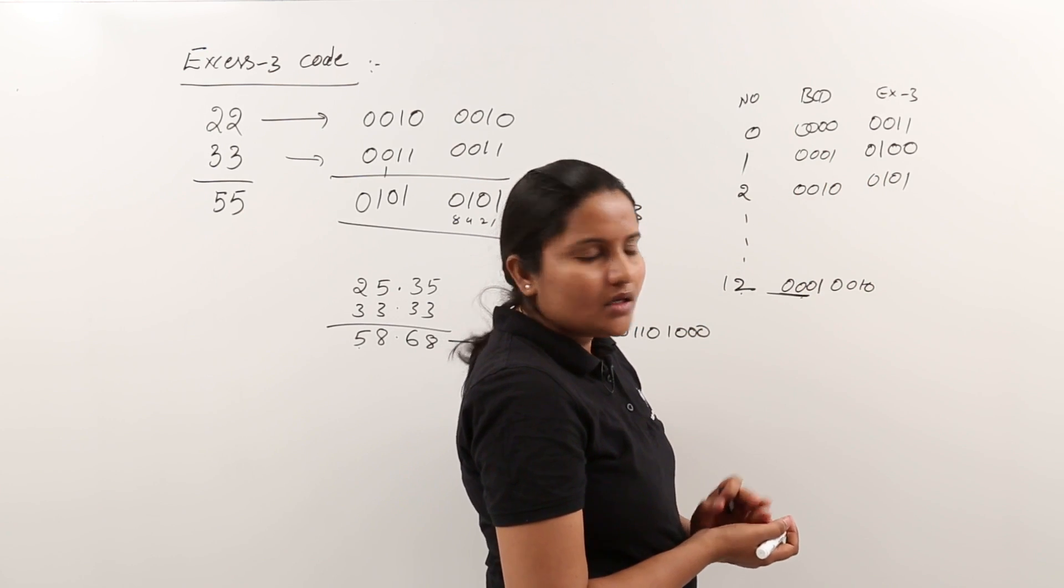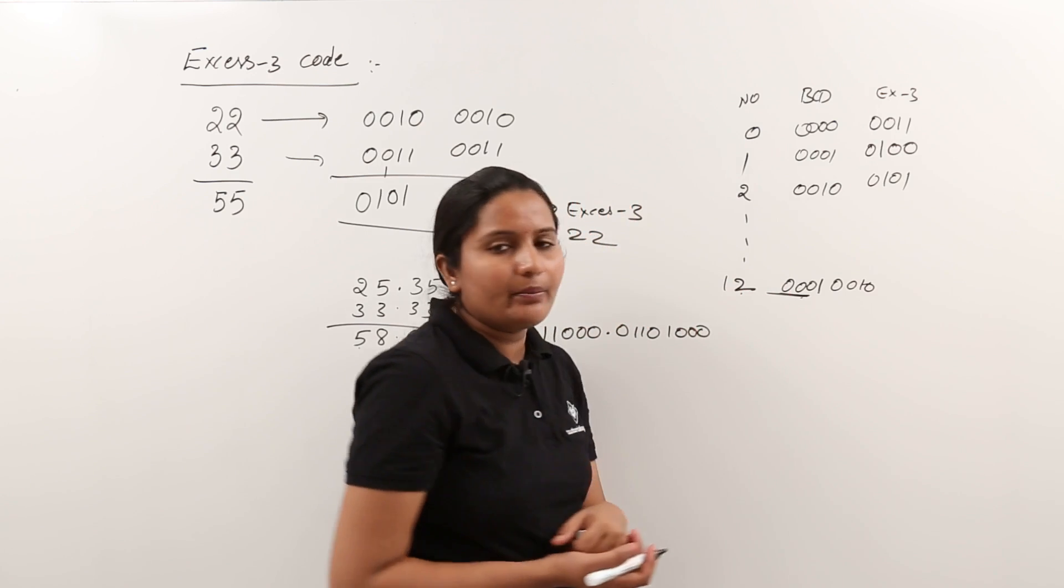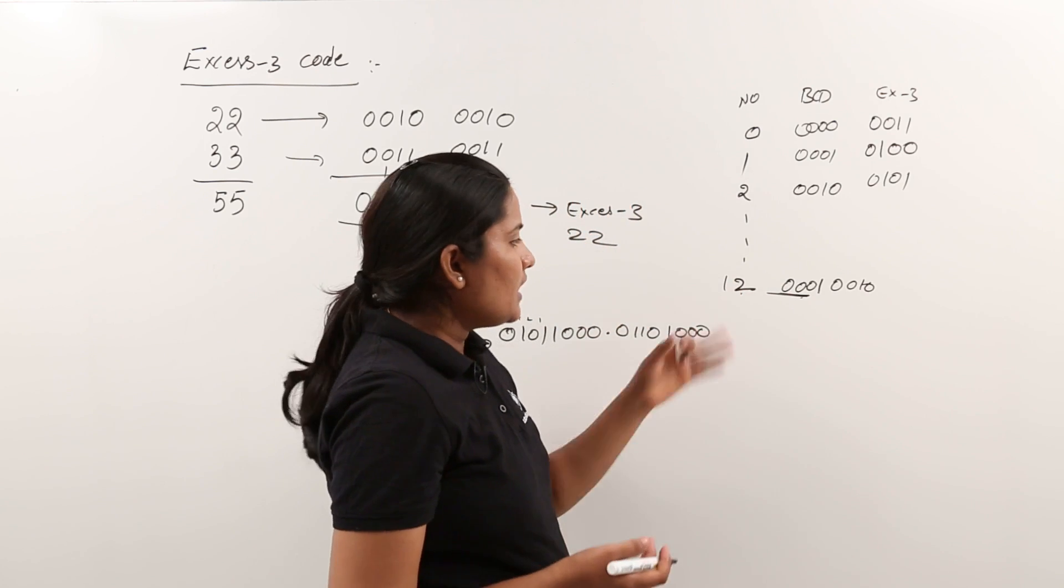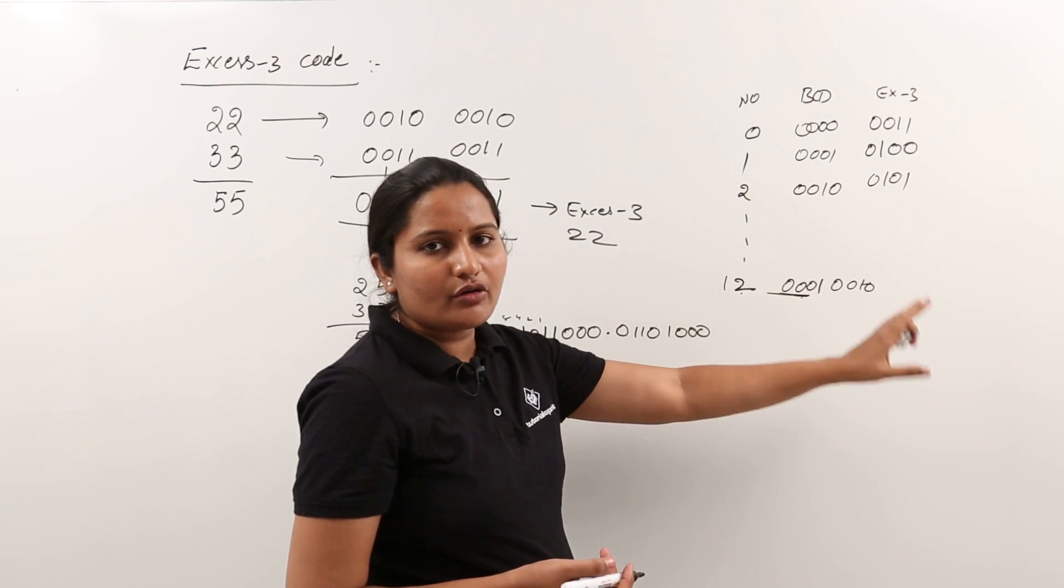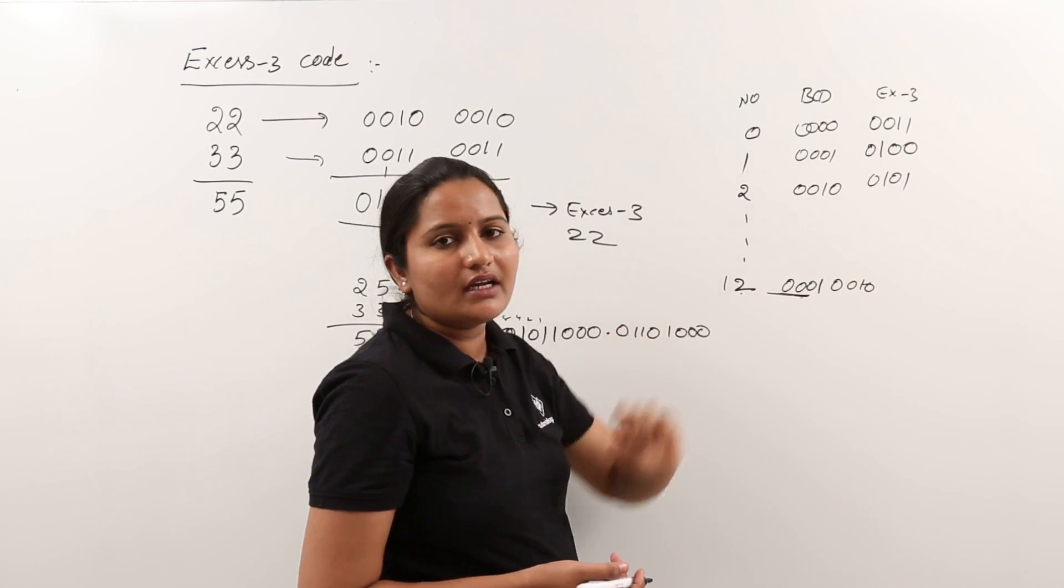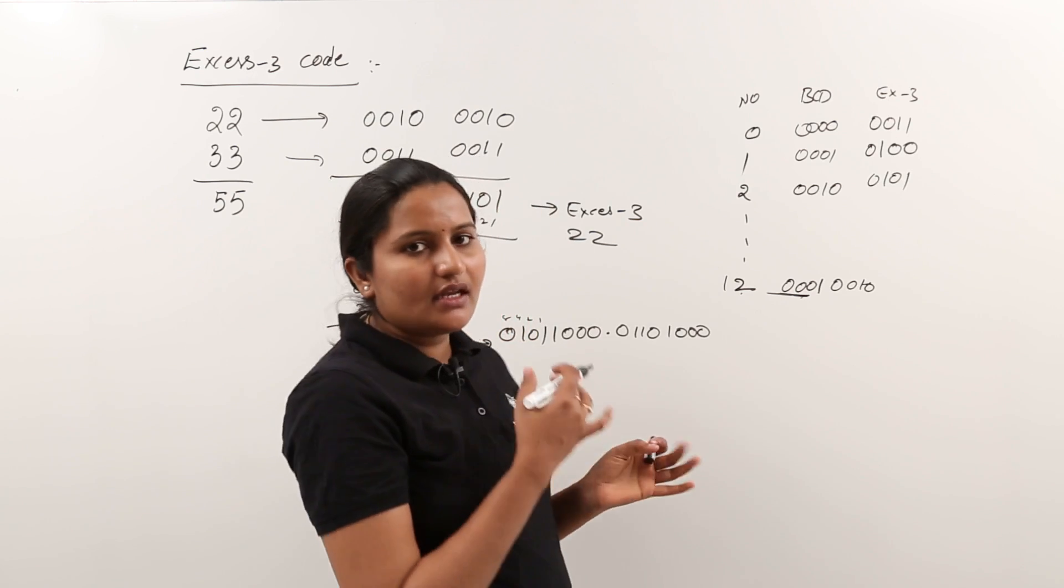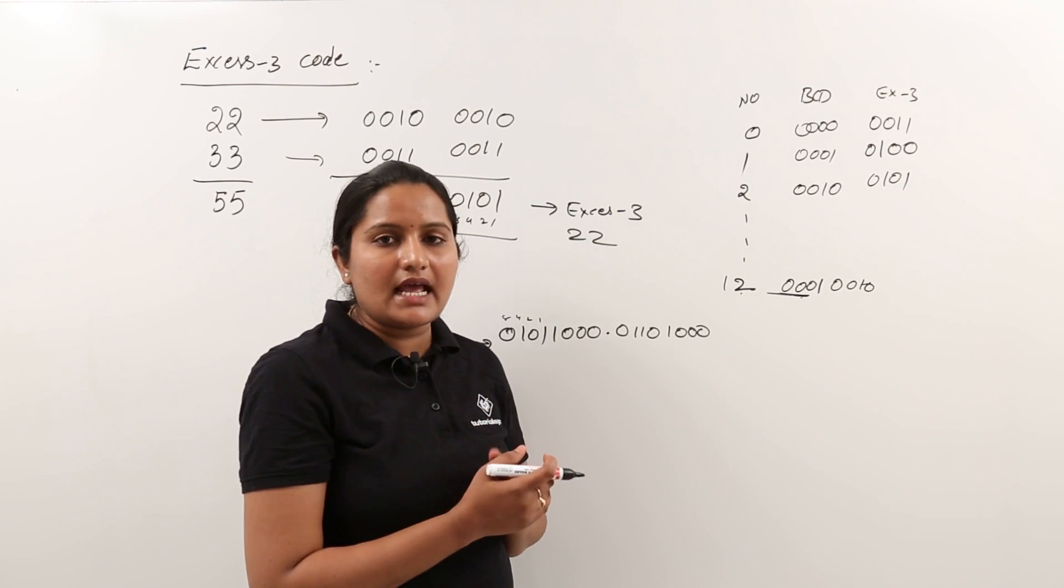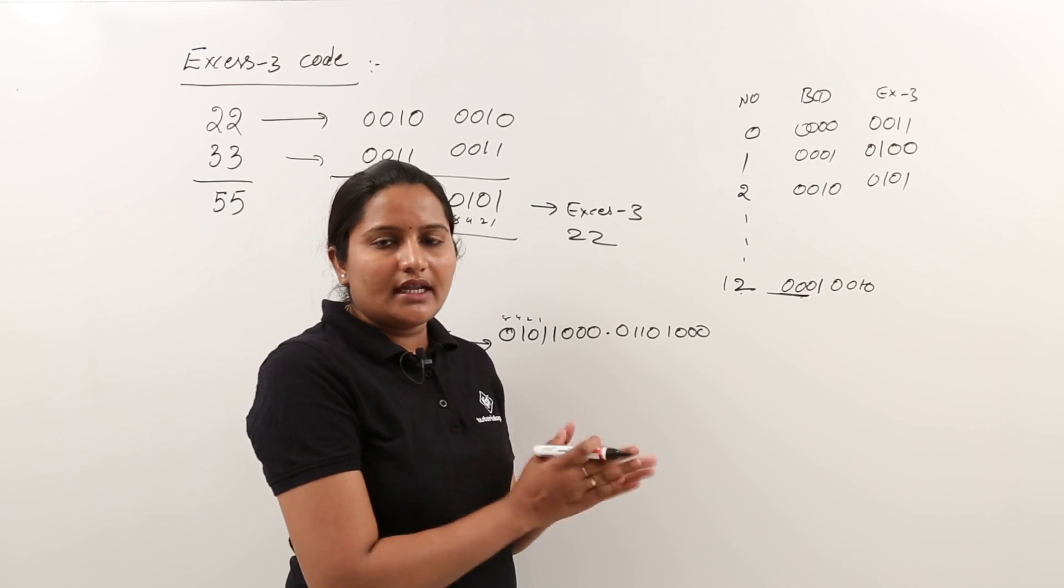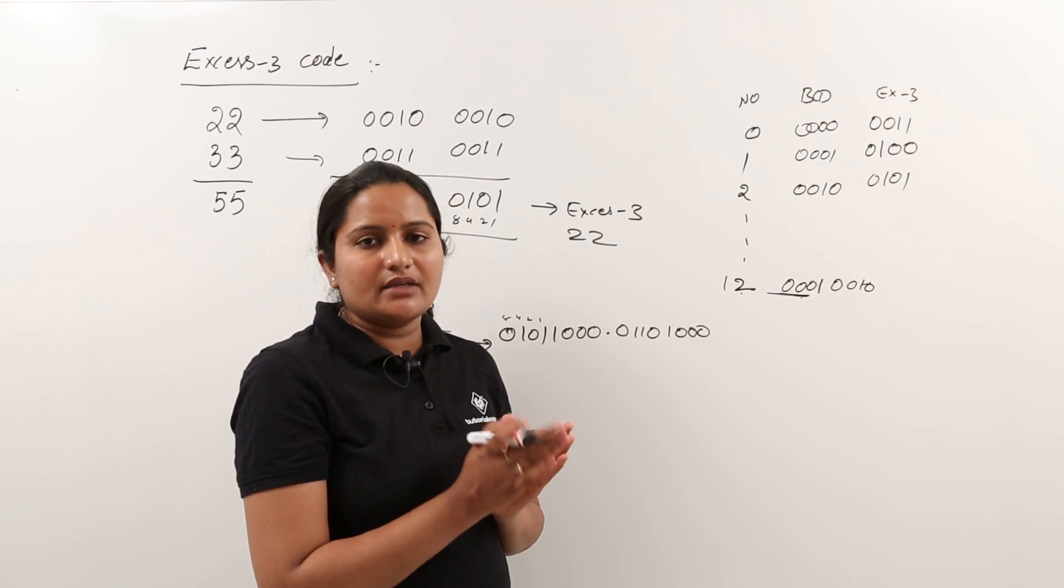Now come to XS3. So here how you can represent in XS3 means again for each and every digit you are adding 3 and you are going to write the code for XS3. In this way we can represent XS3 numbers, and in further classes we are going to deal with XS3 arithmetic, that means XS3 addition and subtractions.